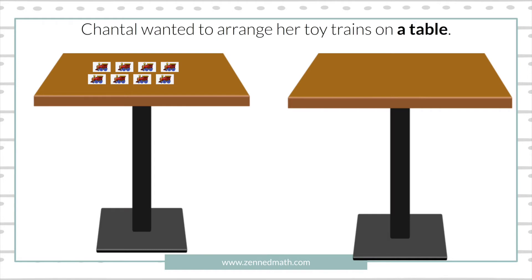Here's where things get complicated, and that's why I said there's some complexity involved. It depends on the context. Because if she had her toy trains on the bookshelf, the factors wouldn't be interchangeable — they can't float in air. But if you changed the context and said she wanted to arrange her toy trees on a table, she could arrange it either way, and then this would be considered an array. So the context you're giving students matters.